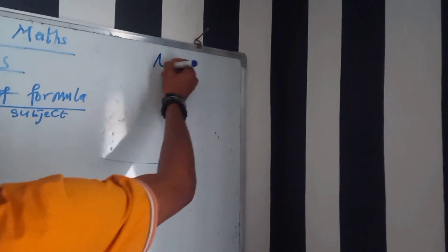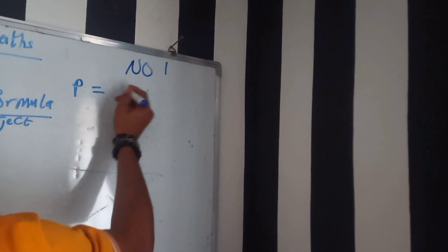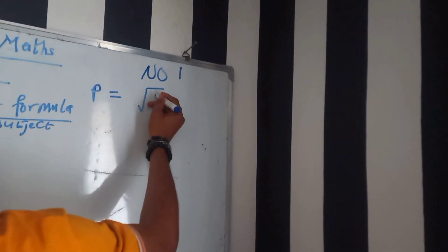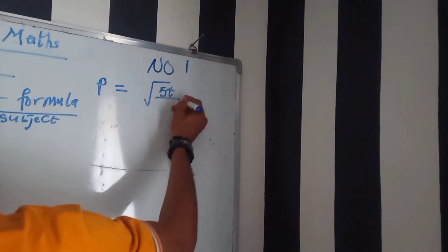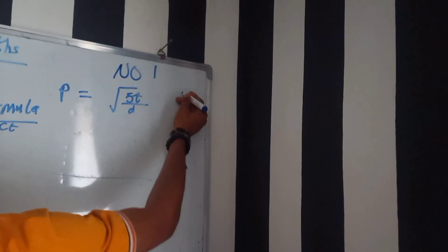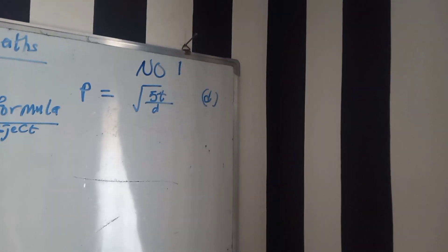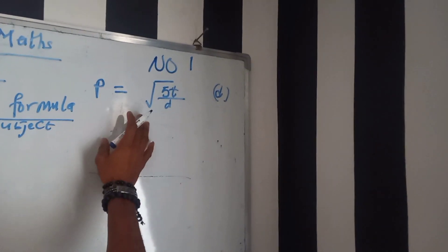We go to number one question: P equals square root of 5c over d and we should make d the subject of formula, which means that we should make d stand alone. So what I'm going to do now is very simple.